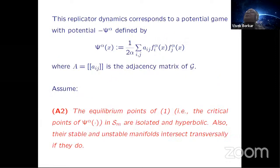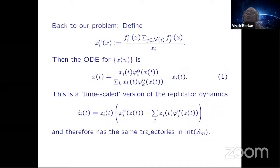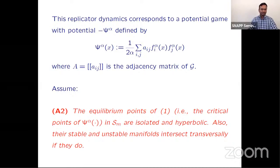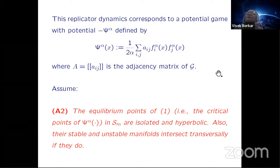This is replicator dynamics corresponding to a potential game. It's a potential game when phi_{alpha,i}(z) is the i-th partial derivative of some common function psi_alpha. That function turns out to be minus of (1/2) sum_{i,j} A_{ij} * z_i * z_j + sum_i log(mu_i * z_i), where A_{ij} is the adjacency matrix of the graph. In potential games, the dynamics converge to local minima of the potential — or, because of the minus sign, local maxima of psi_alpha. So we are already halfway through the convergence results for fixed alpha.